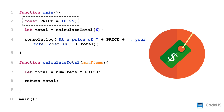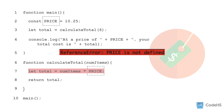But what happens when we declare the price variable inside of the main function? We get an error that says price is not defined in the calculateTotal function. This means when we declare the price variable in the main function, we cannot access it inside of the calculateTotal function.